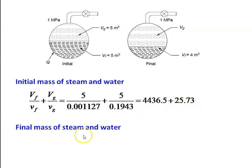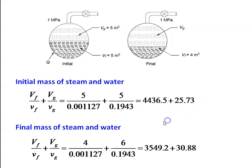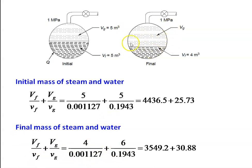Final mass of steam and water: capital Vf divided by small Vf plus capital Vg divided by small Vg. Volume of fluid now 4 meter cube, Vf equal to 0.001127, plus remaining volume 6 meter cube occupied by steam divided by 0.1943, which gives 3549.2 plus 30.88.